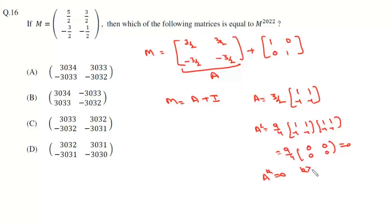That means A square is 0, so basically A to the power k is 0 for any k which is greater than or equal to 2. Now if we write M to the power 2022, basically it will be A plus I to the power 2022.